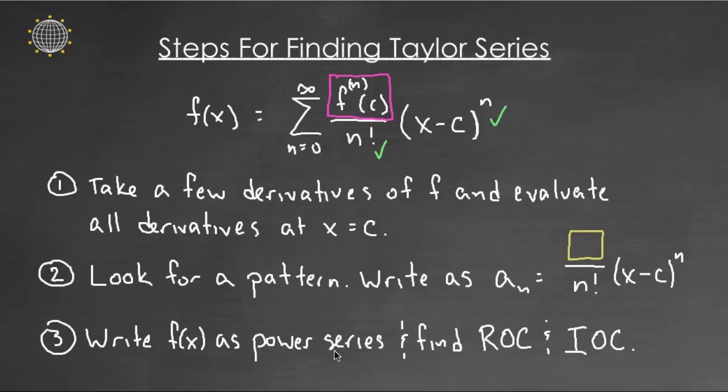We can now write the function as a power series, right? We write it as a sum n equals zero to infinity. Our pattern that we discovered in the numerator over n factorial times x minus c to the n. But we're not quite done. That is the Taylor series representation of the function. But it's always also a good idea to find that Taylor series radius of convergence and interval of convergence typically using something like the ratio test.